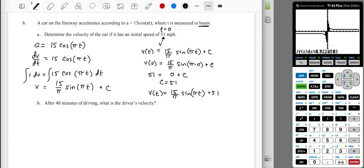After 40 minutes of driving. So now that our units of time are in hours, 40 minutes, we know one hour is 60 minutes. Do a unit conversion, this is the same as saying two-thirds, minutes cancel, two-thirds times one is two-thirds of an hour. So two-thirds is our measure of t, we want to know what our driver's velocity is going to be. So v of two-thirds, 15 over pi, sine of pi times two-thirds, plus 51.